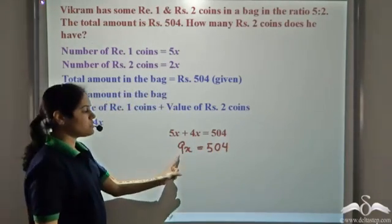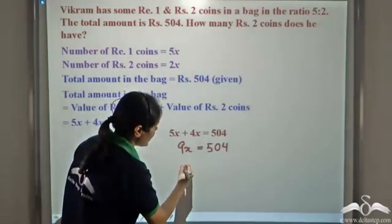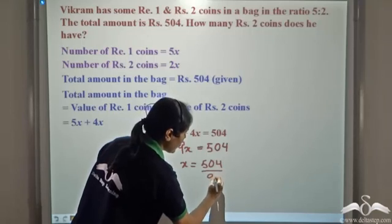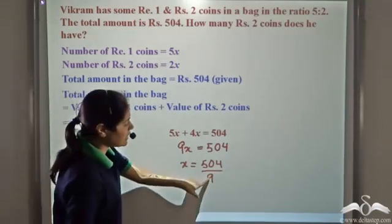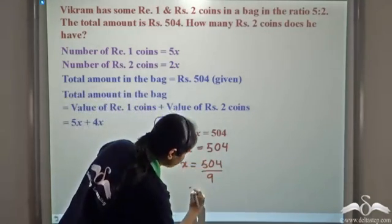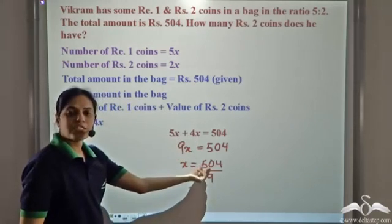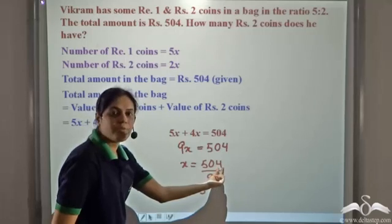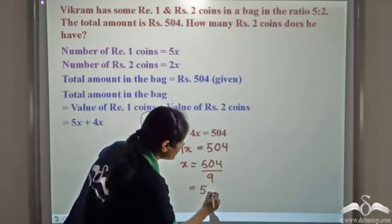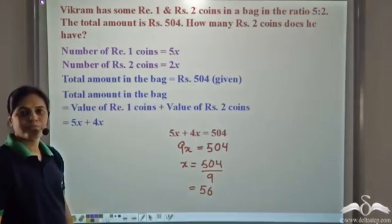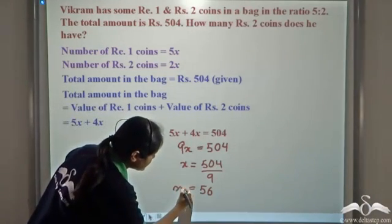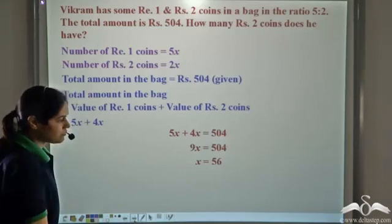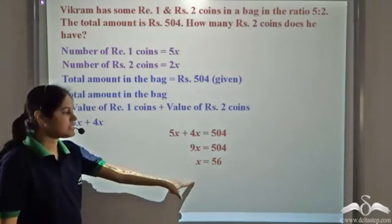Transposing 9 to the right hand side, we get x is equal to 504 divided by 9. 9 into 5 is 45, 50 minus 45 is 5, we take 5 and 4 to get 54, and 9 into 6 is 54. So we get x is equal to 56.